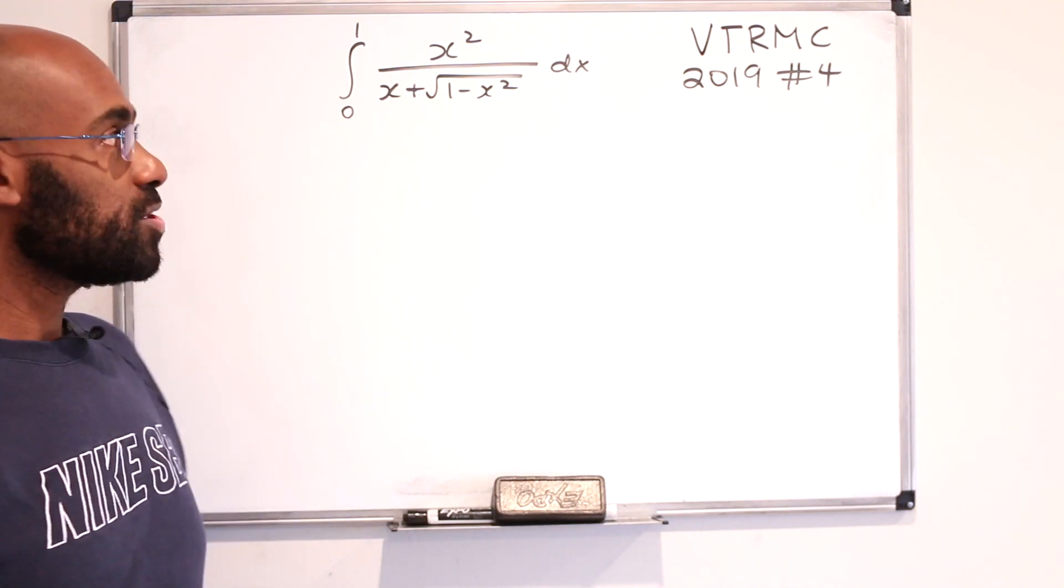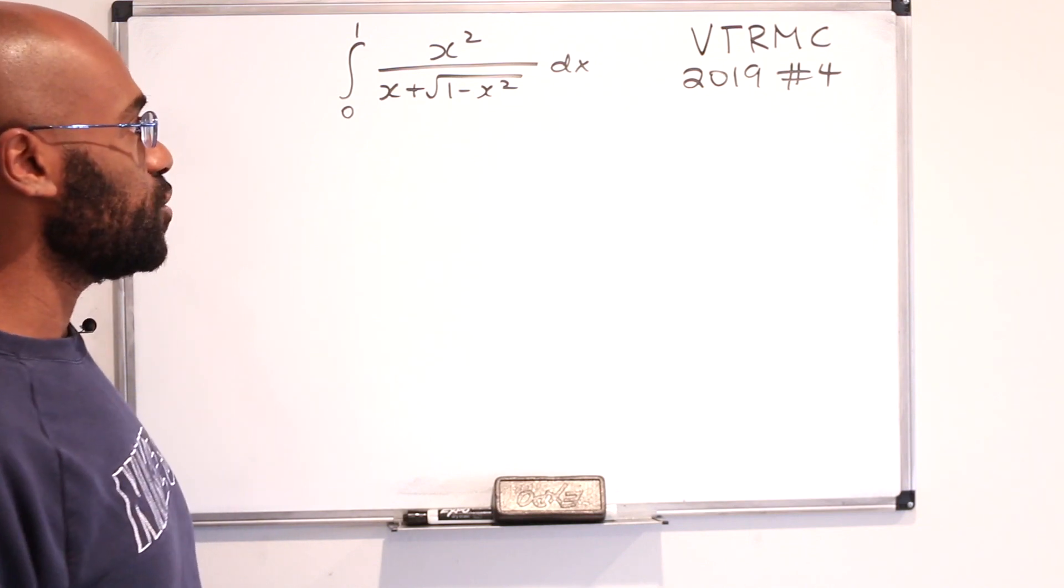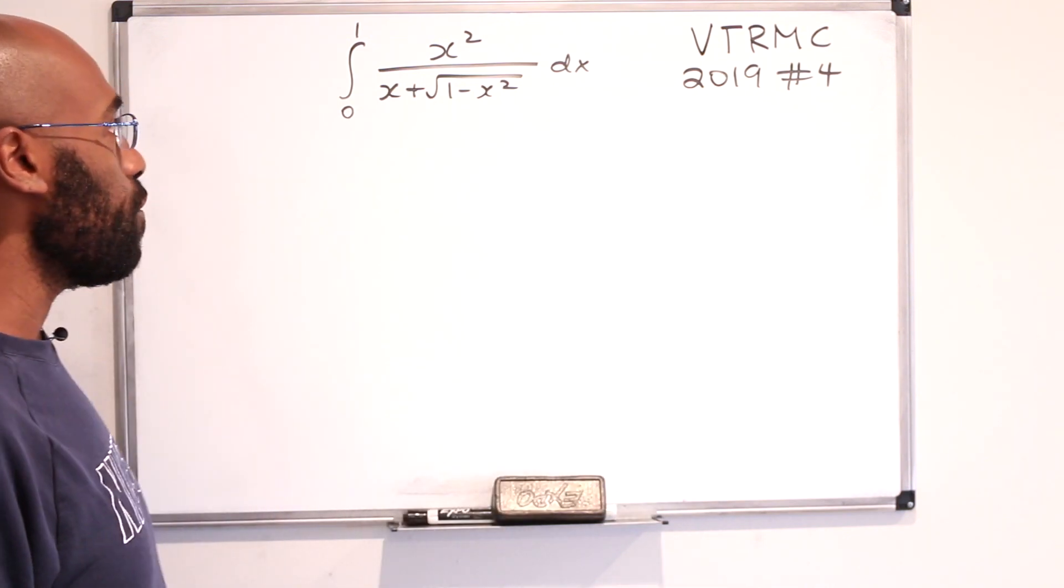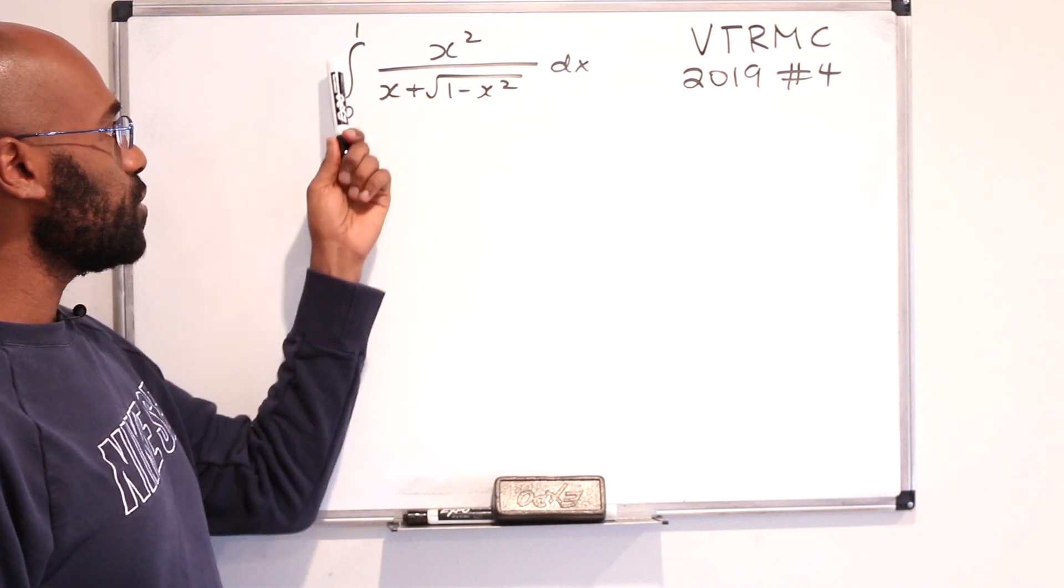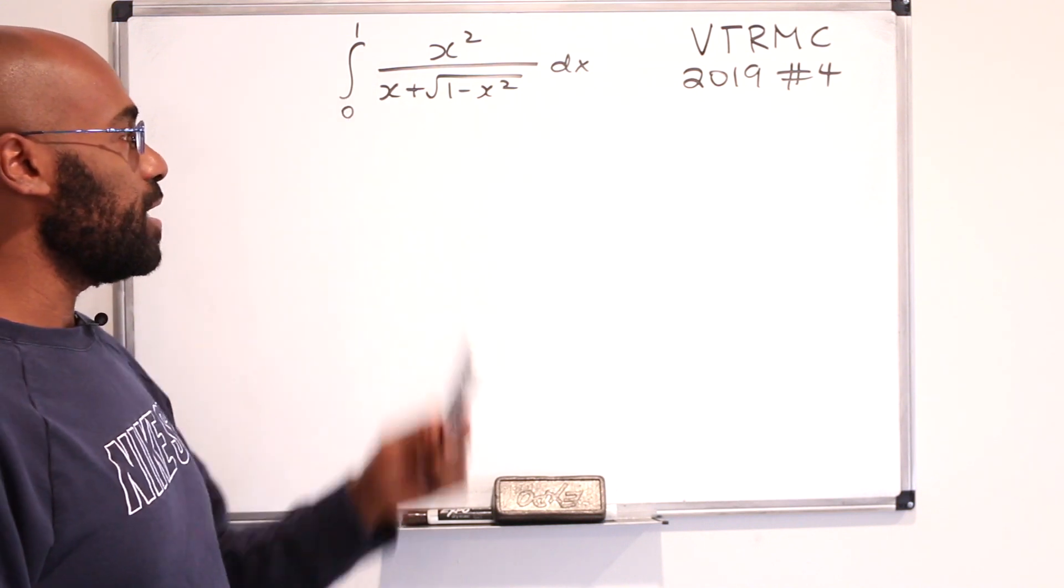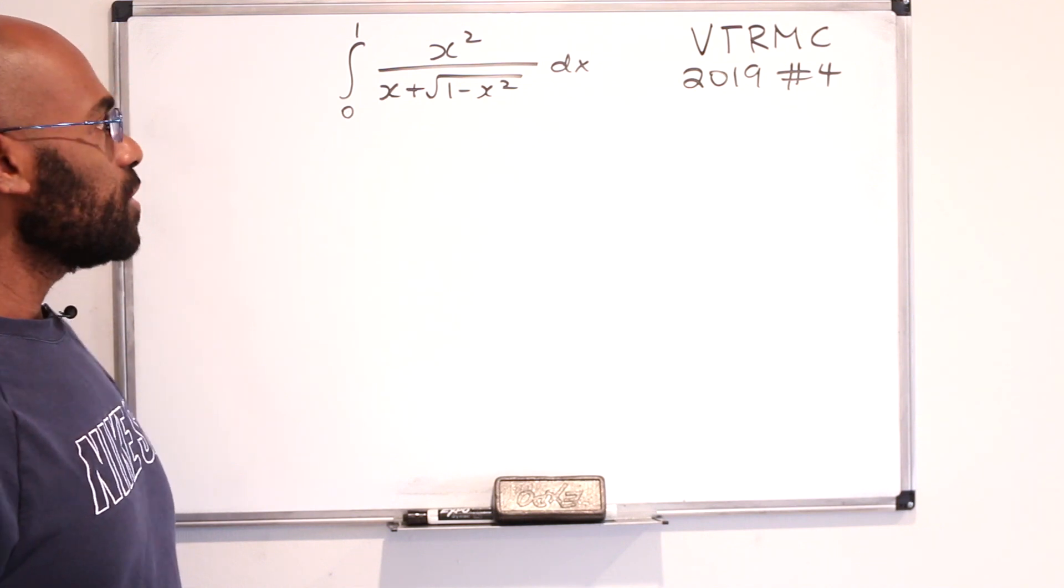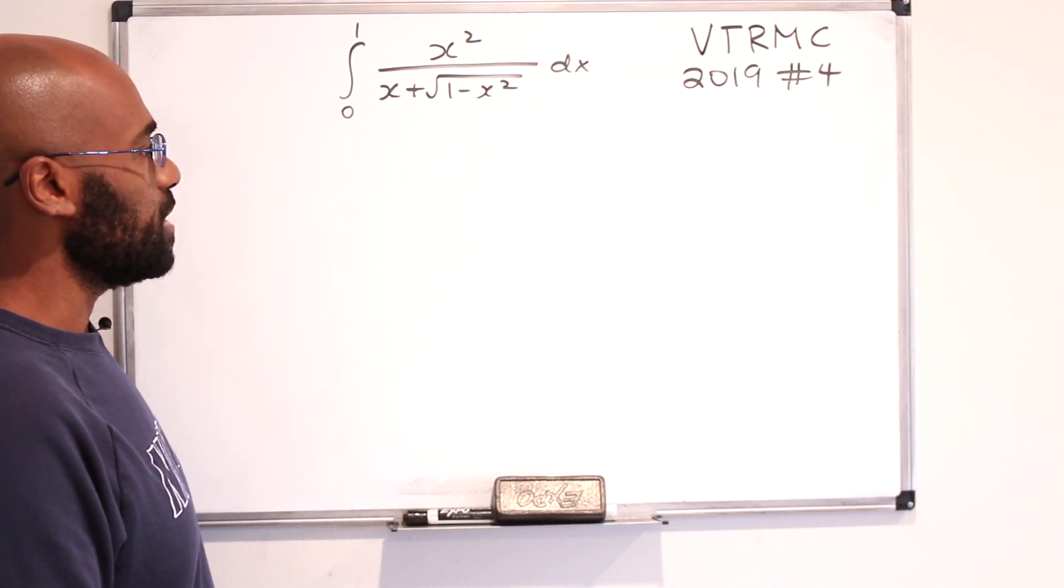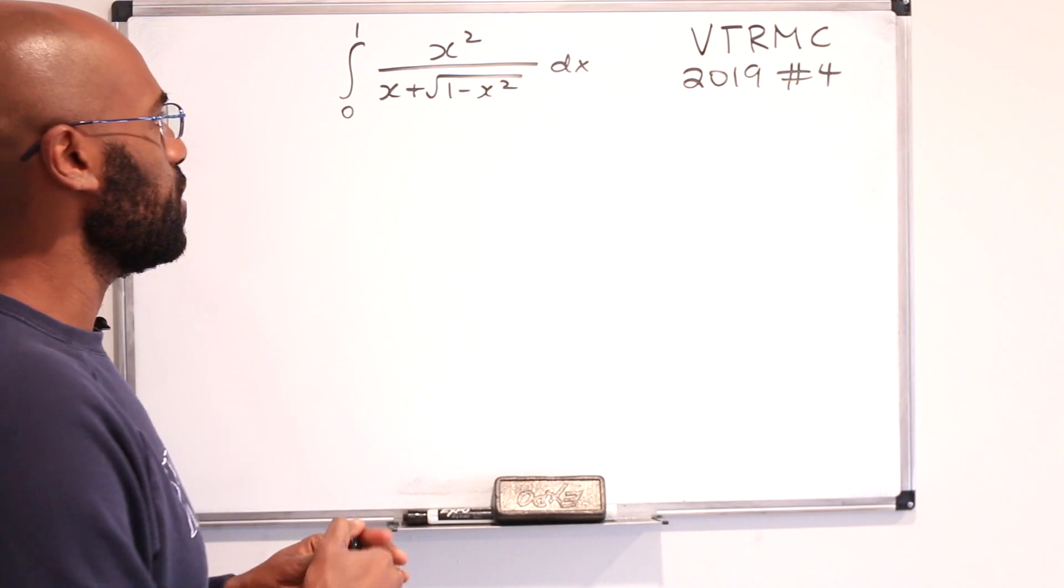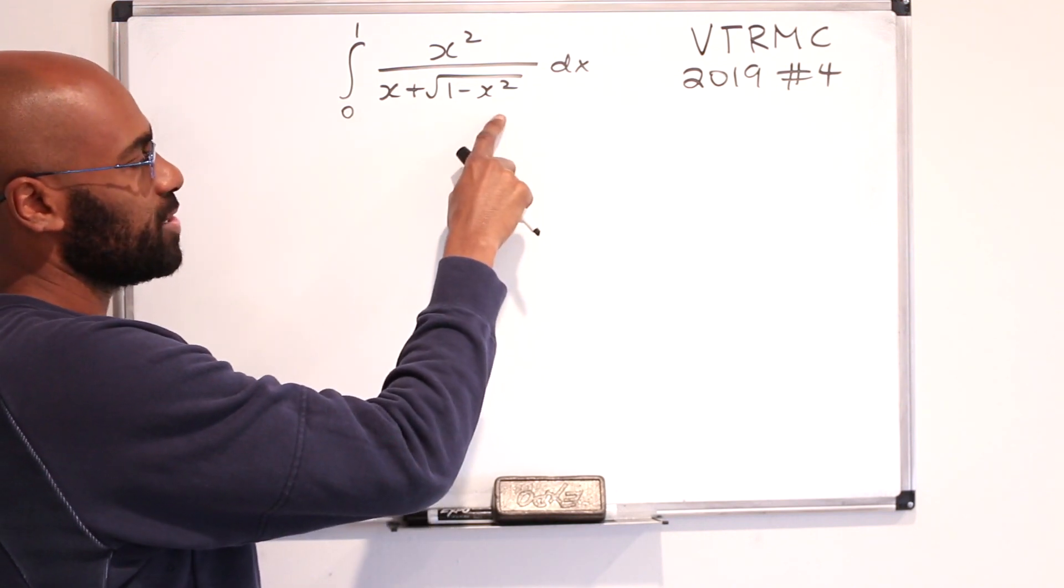Okay, today we're going to solve our first problem from this competition, which was on the 2019 competition as number four, and it's this integral from zero to one of x squared over the quantity x plus the square root of one minus x squared dx. The first thing you might notice is because we have this square root of one minus x squared, it kind of feels like we ought to do some type of trigonometric substitution.